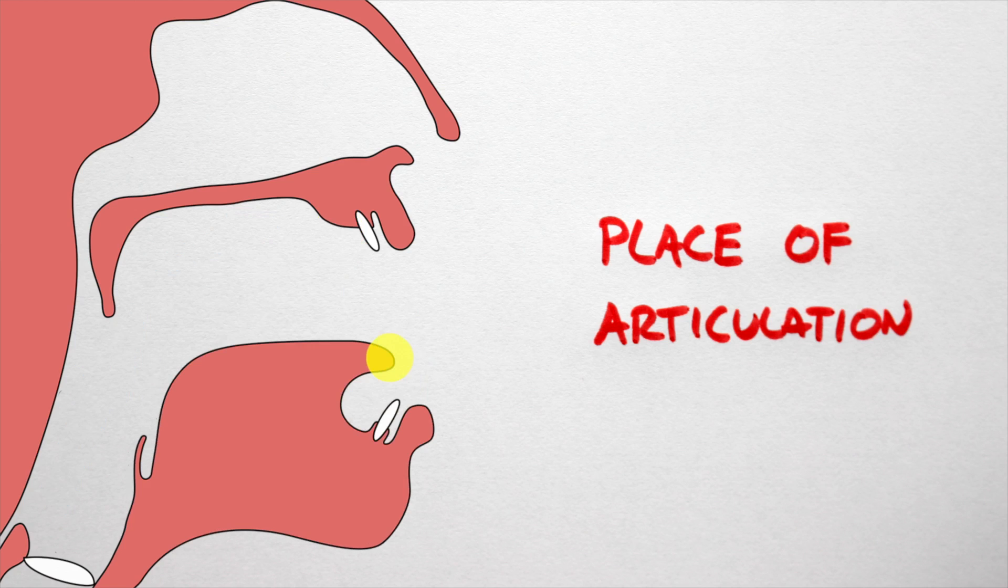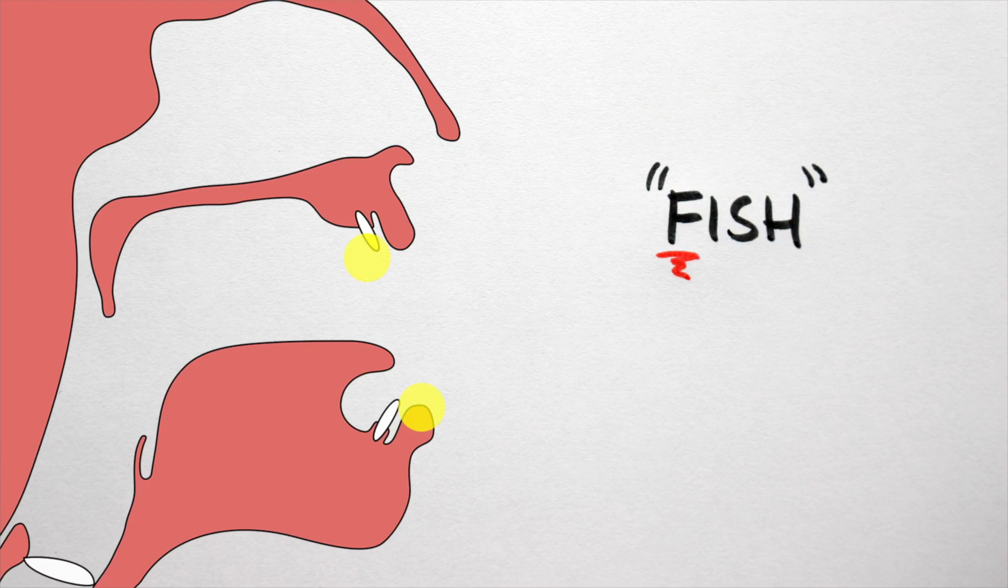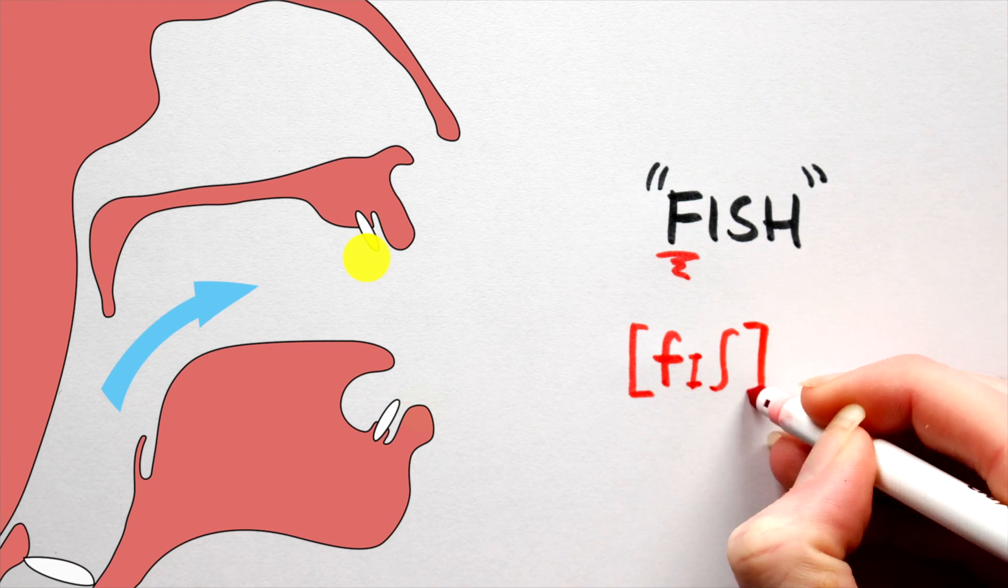One articulator will move, the active articulator, and one will remain stationary, the passive articulator. Take the F sound in fish, for example. Here, the lower lip is the active articulator, and the upper teeth are the passive articulators. The lower lip moves to the upper teeth, an obstruction is created, air is blowing through, and boom, you get an F sound.